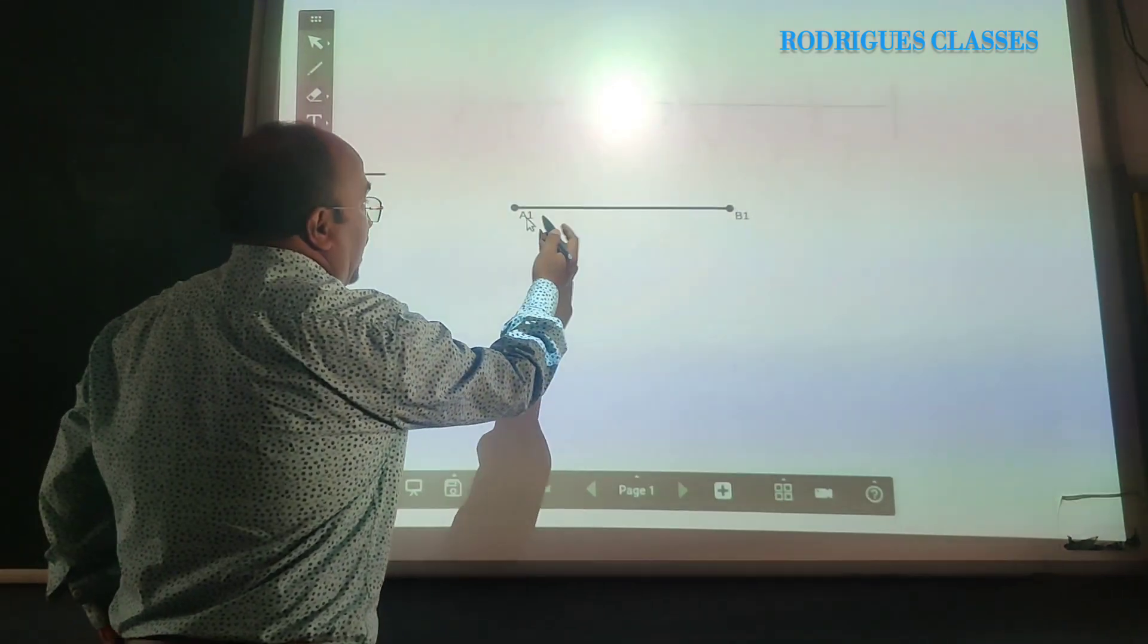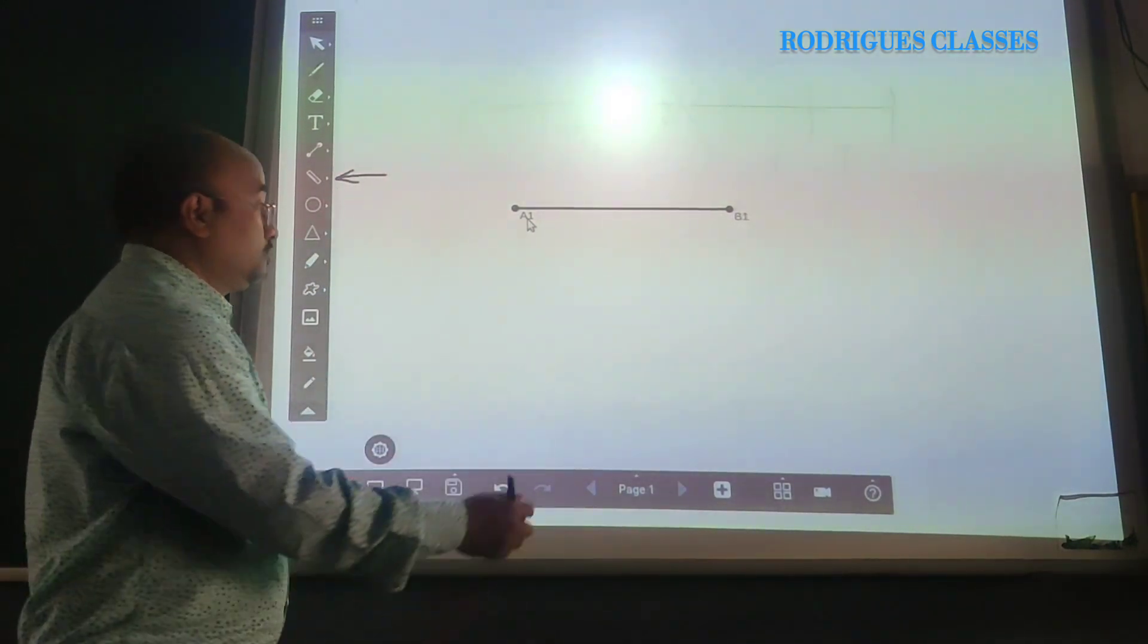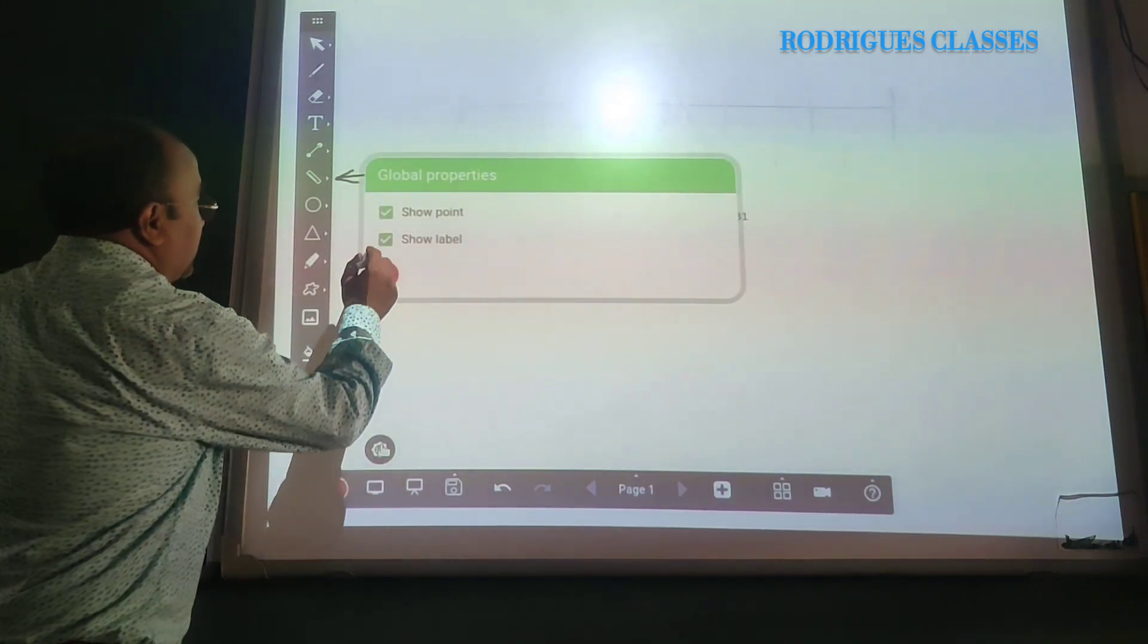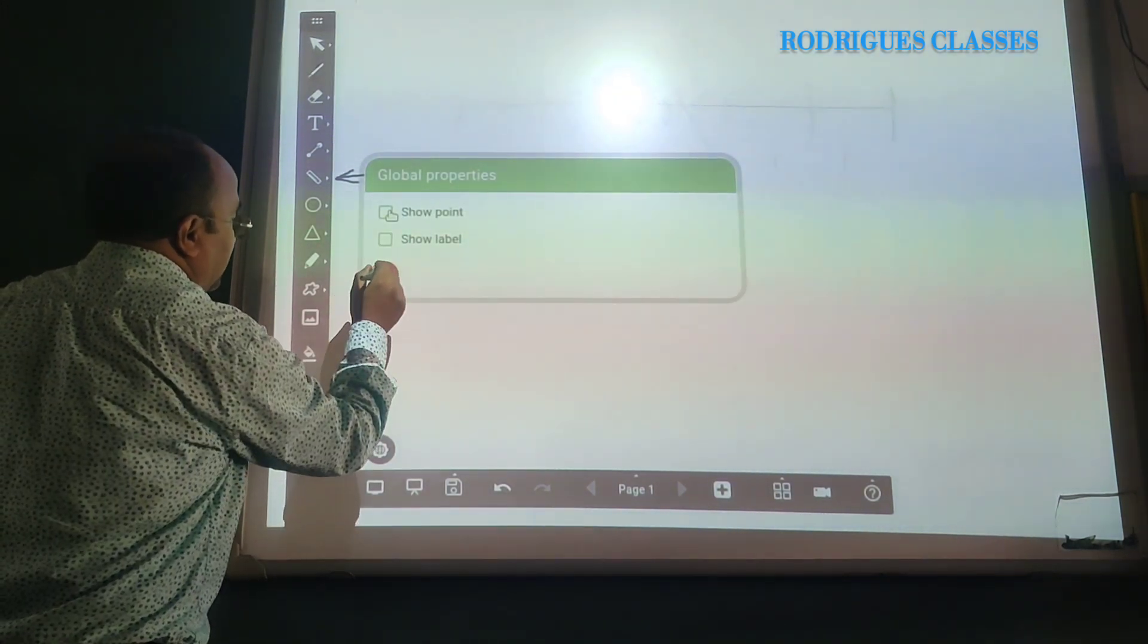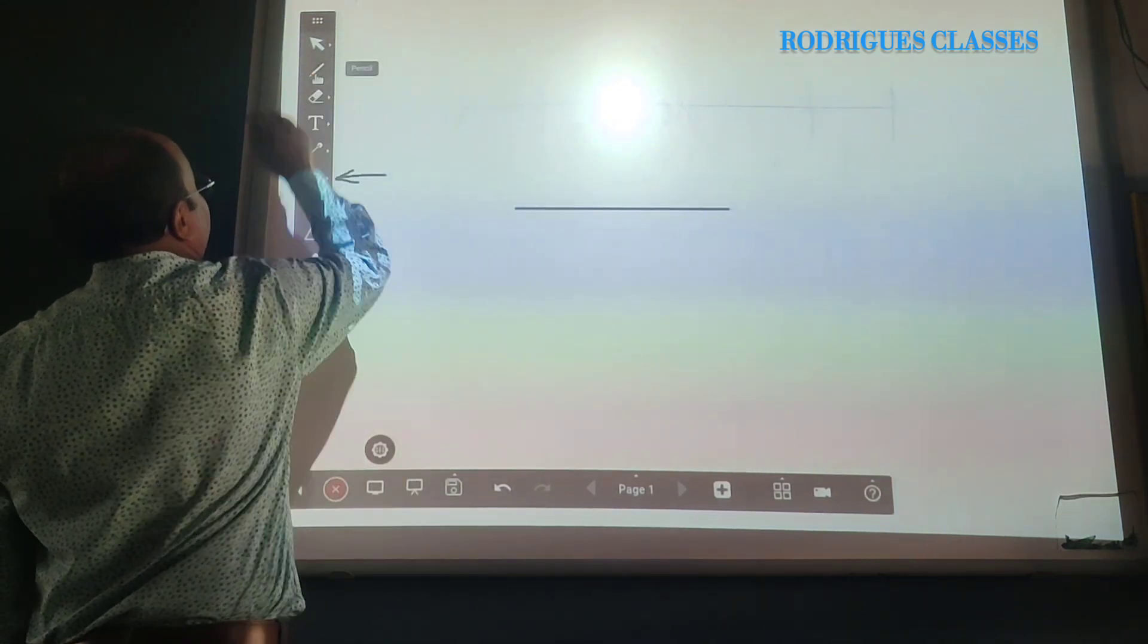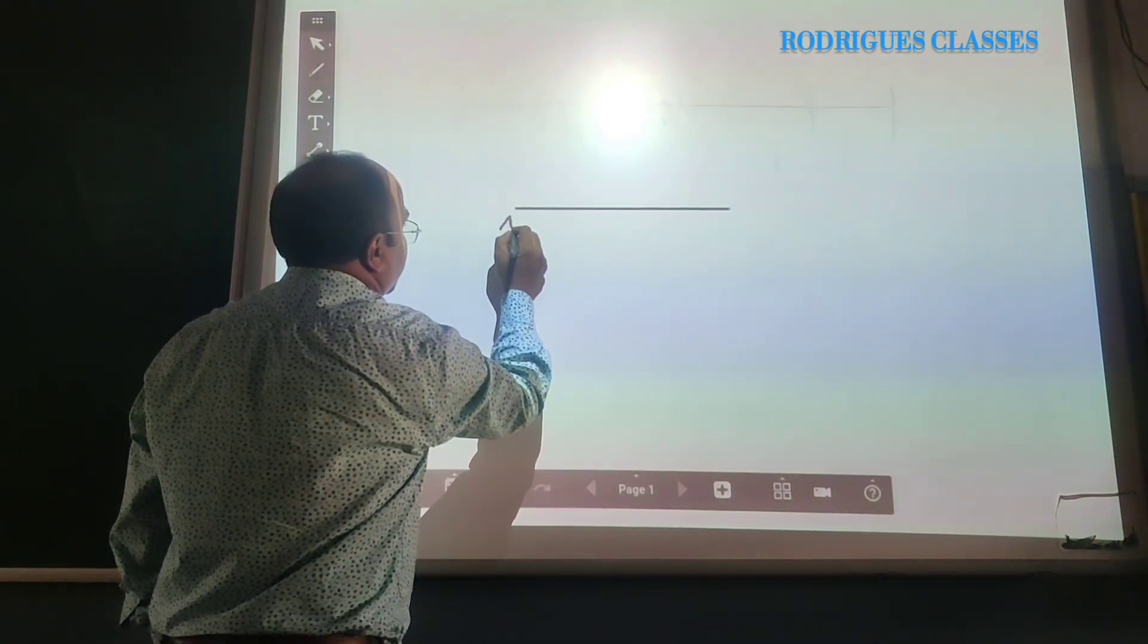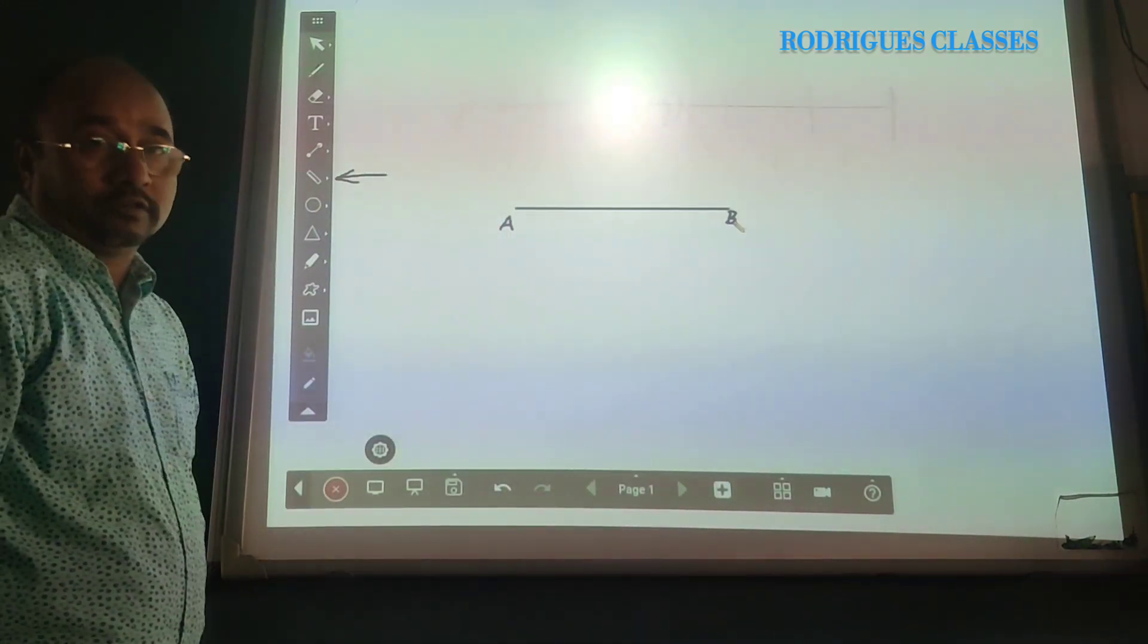Now, these are the terms that we might require to write a different alphabet. So, what we need, we can remove it. I will take this part, then show label, show point, and cross it. So, now that alphabet is not there. So, if I want to write the required alphabet I want, I take the pencil, mention here A, and mention here E. So, the line is done.